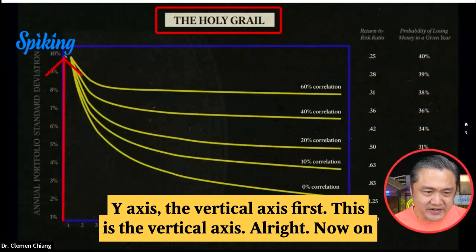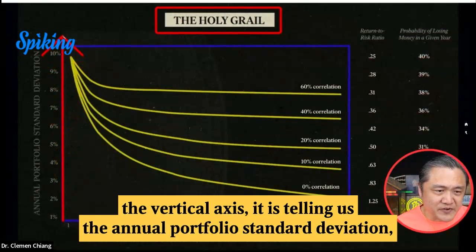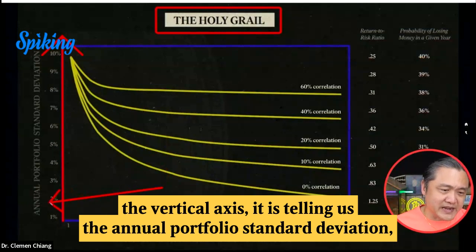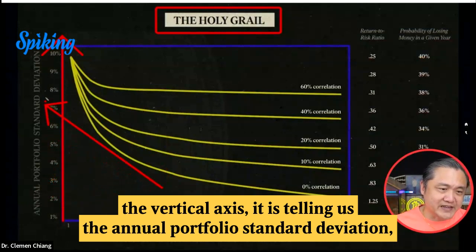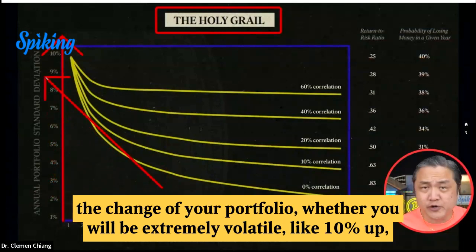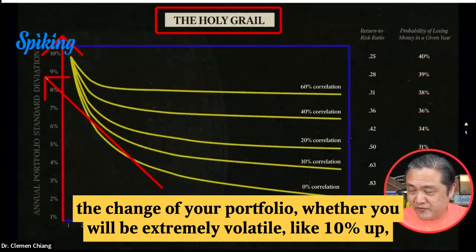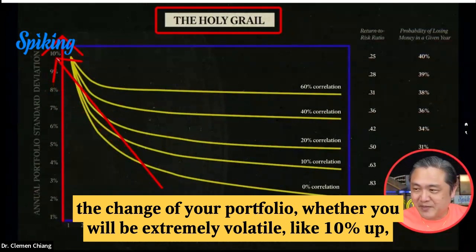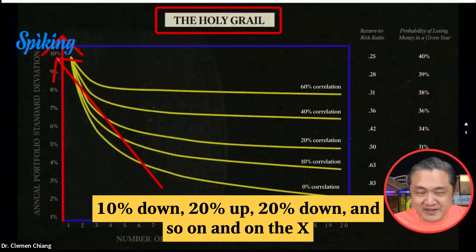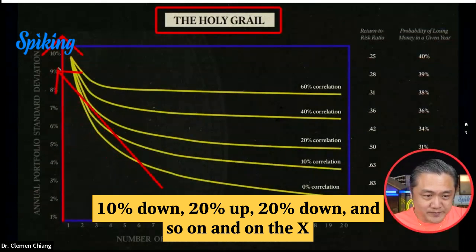This is the vertical axis. On the vertical axis, it is telling us the annual portfolio standard deviation — the change of your portfolio, whether you will be extremely volatile, like 10% up, 10% down, 20% up, 20% down, and so on.